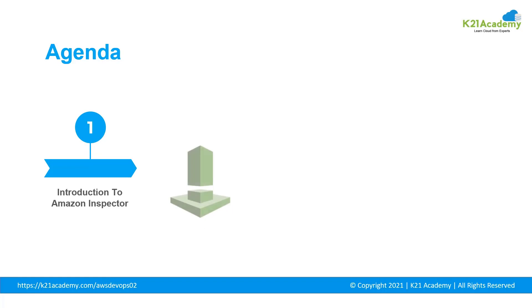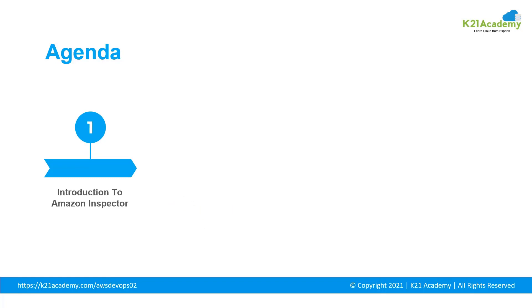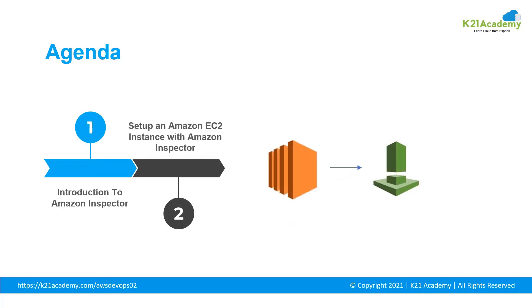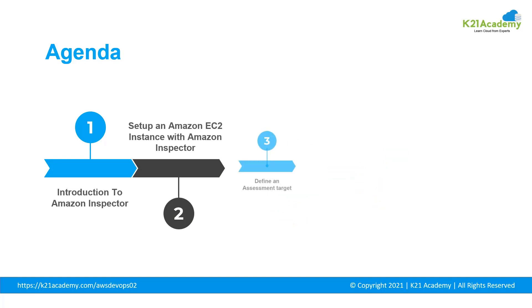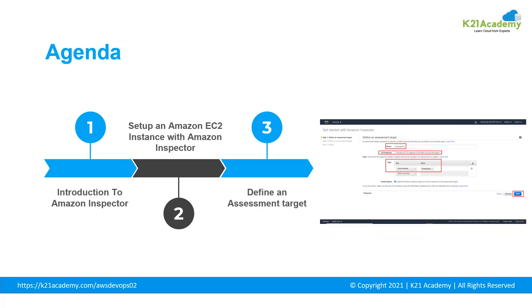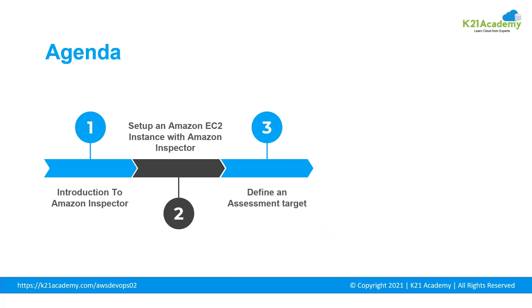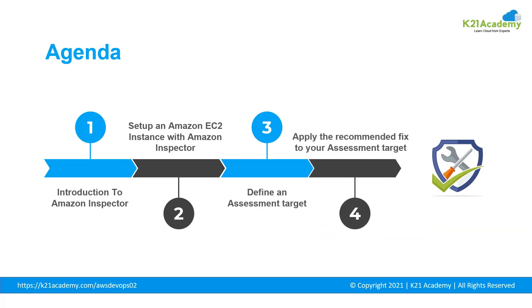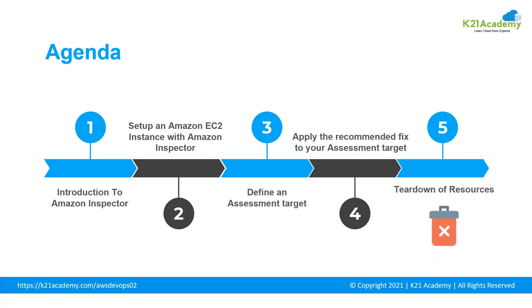Let us take a quick glance at the agenda. Firstly, we will be getting introduced to Amazon Inspector. Then we will see how to set up an Amazon EC2 instance with Amazon Inspector. Post that, we will see how to define an assessment target and how to apply the recommended fix to your assessment target. And finally, we will see how to delete the resources.